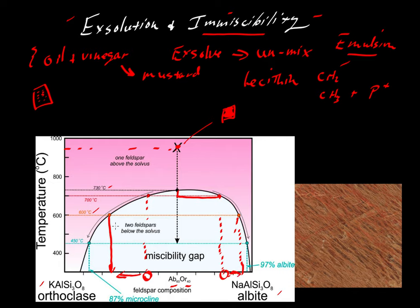So notice that due to the shape of this curve, that curve would be referred to as a solvus. Then due to the shape of that curve, we can see that the lower the temperature, then the greater this miscibility gap. The greater the degree of chemical separation between the potassium rich and the sodium rich components in the alkali feldspar structure. And we can see an example of that over here to the right.